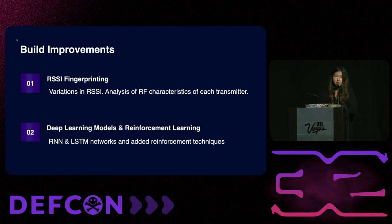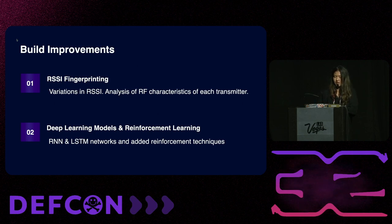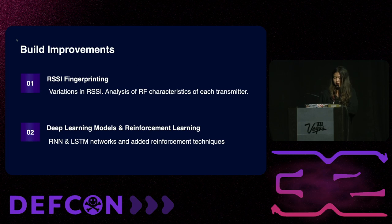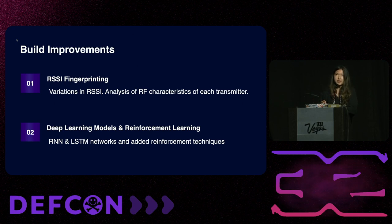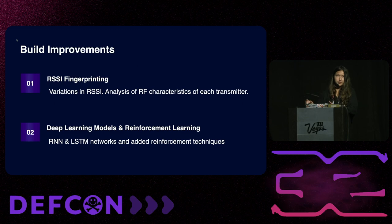A second improvement is using more refined algorithms. I used the DNN for this approach, but there's a lot of exploration possible with other models — recurrent neural networks or long short-term memory networks could be effective, alongside reinforcement techniques to improve the accuracy of the current network. The tests I ran reflected accuracy rates of 90%, but that could be improved using these approaches.